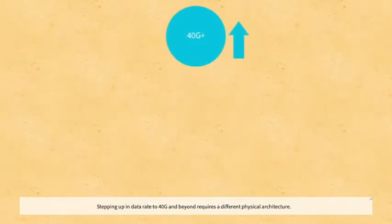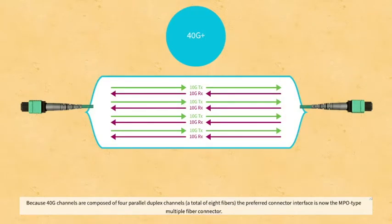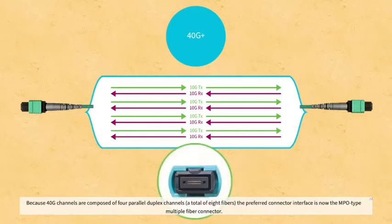Stepping up in data rate to 40G and beyond requires a different physical architecture. Because 40G channels are composed of four parallel duplex channels, a total of eight fibers, the preferred connector interface is now the MPO-type multiple fiber connector.